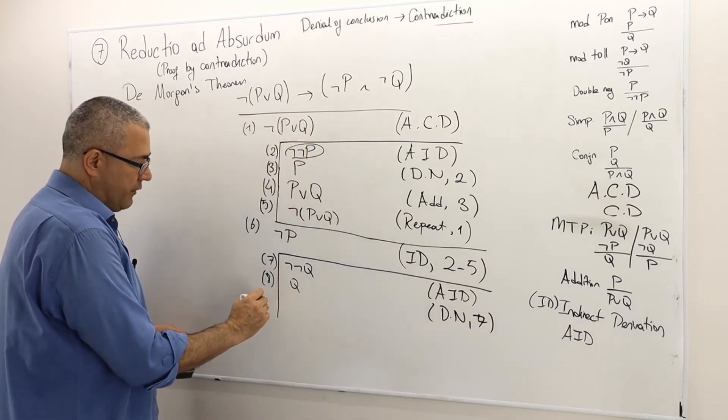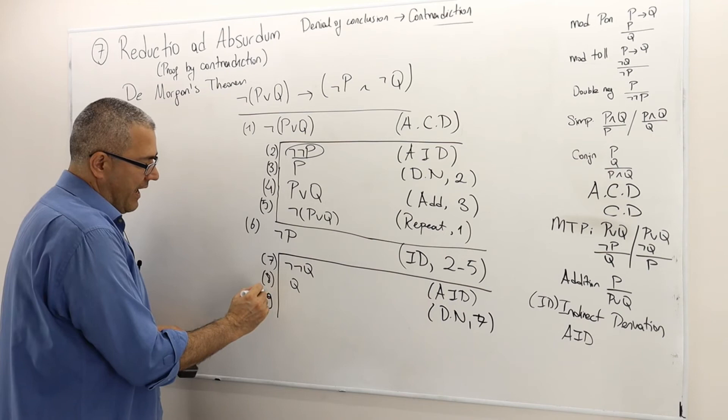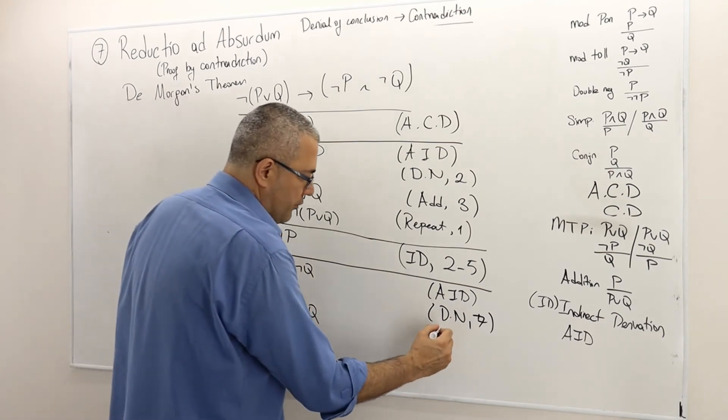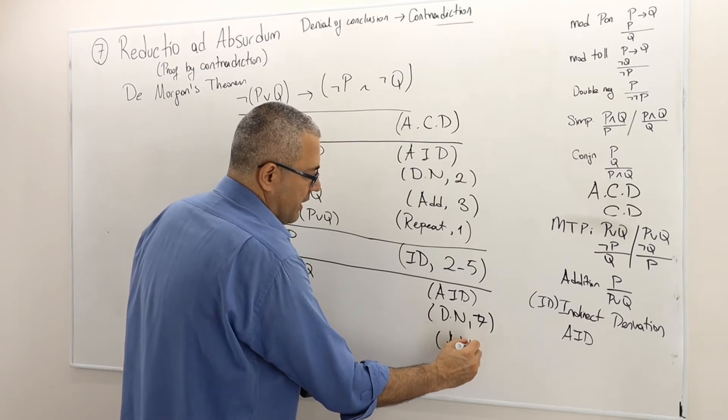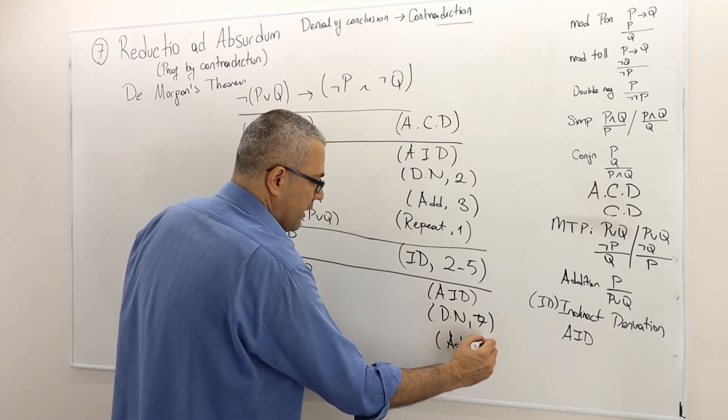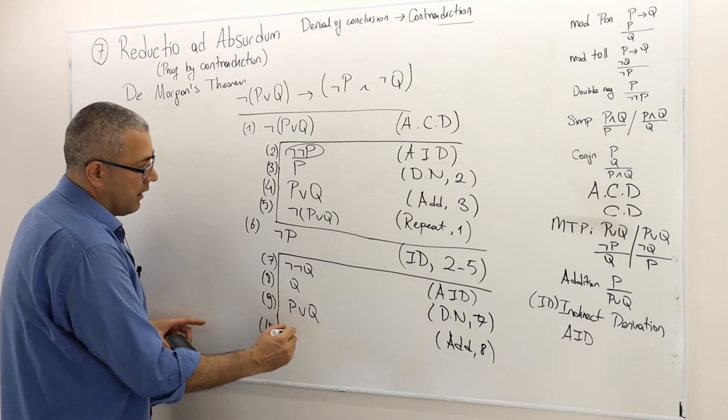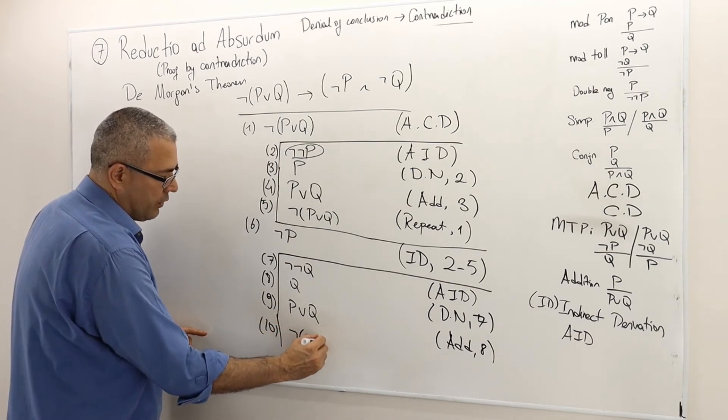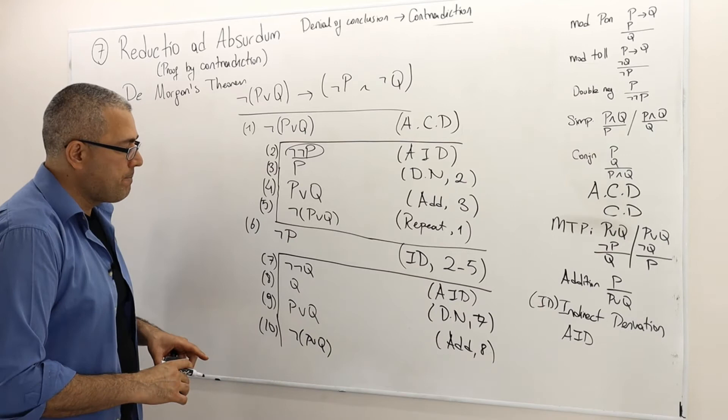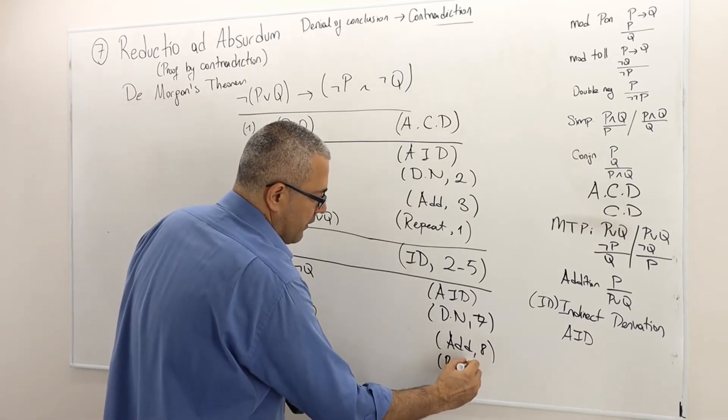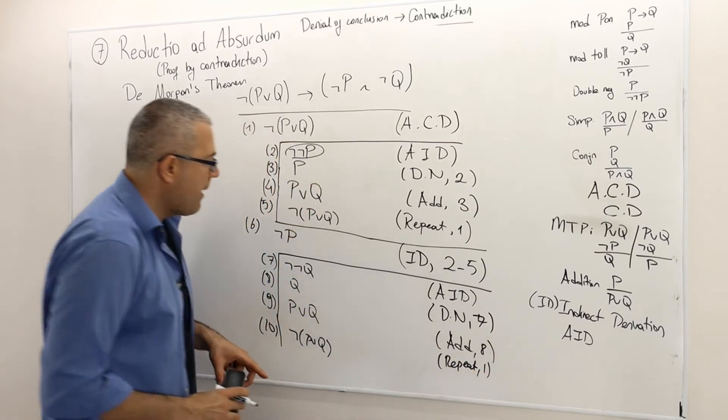So once I have Q, I just add another argument P. So P or Q must be true as well. So it's just addition to the argument in line eight. So well, not P or Q is true because of the argument in line one.